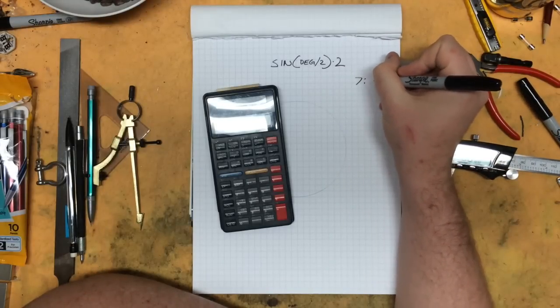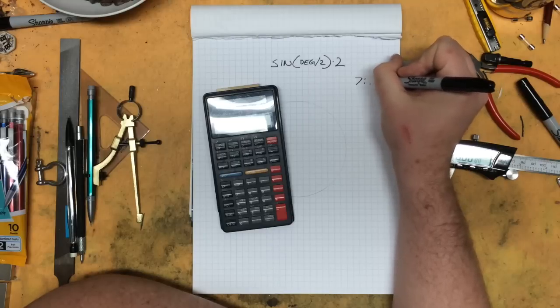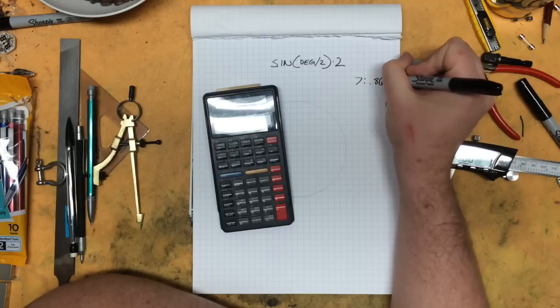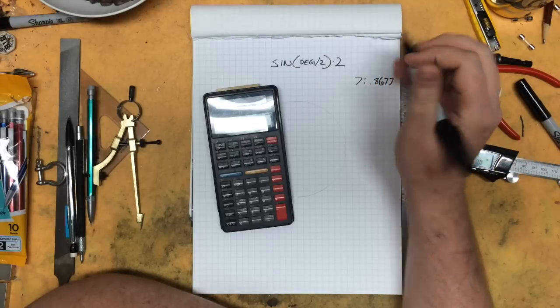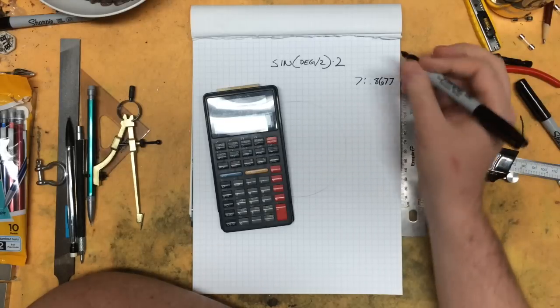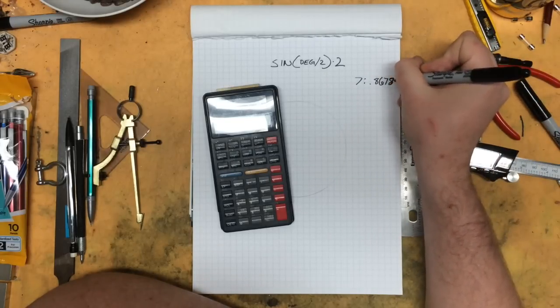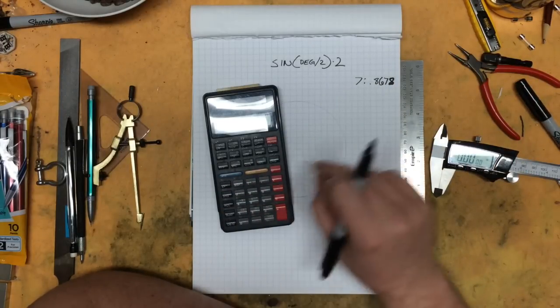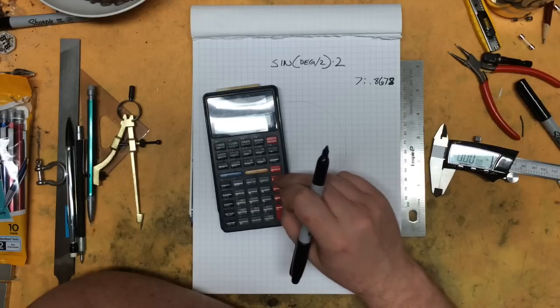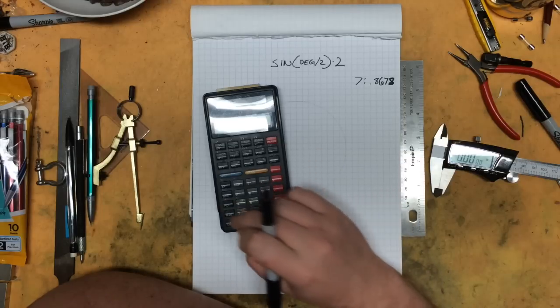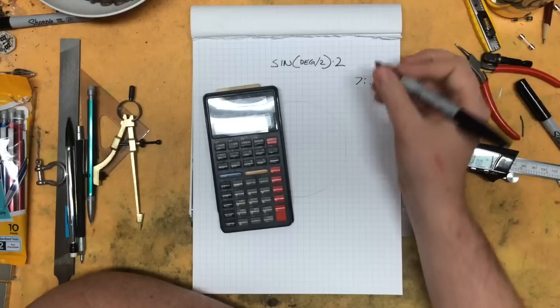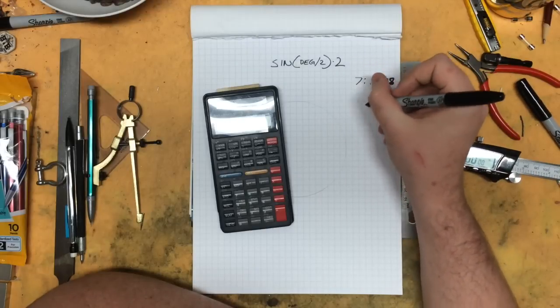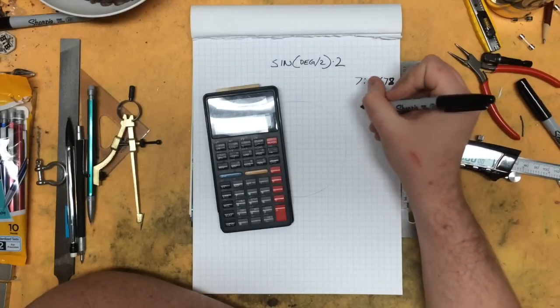Times two. That's our multiplier. Our multiplier for seven is going to be 0.8677 and so on. Let's call that eight. In fact, I'm just going to store that value on my calculator. Now we take our radius—in this case it's two—and we're going to multiply it by the recall value.